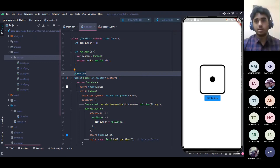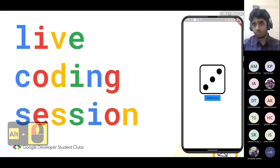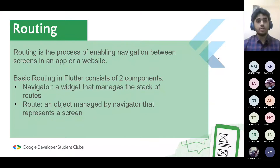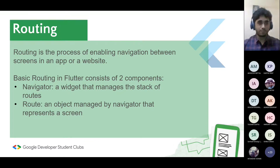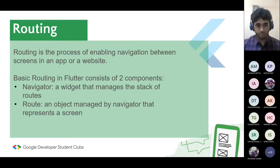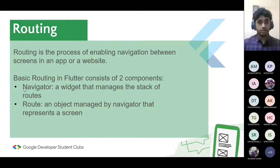Now if we hot reload and click the button, we can see the dice face changing — we have successfully created a rolling dice screen. The UI doesn't look very polished but the functionality is working. Moving on, the next topic is routing. Routing is the process of enabling navigation between different screens in an app. For example, in YouTube there's a splash screen, a home screen, a trending screen, and a video screen — navigating between those is routing.